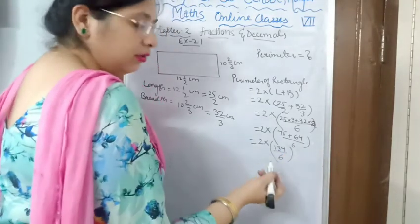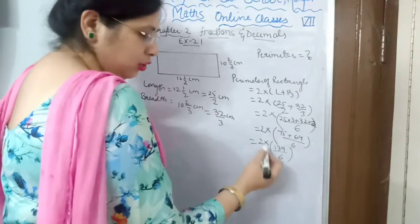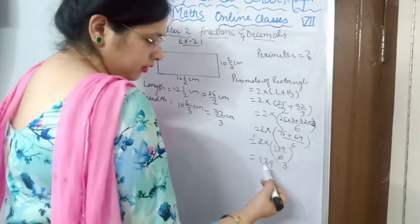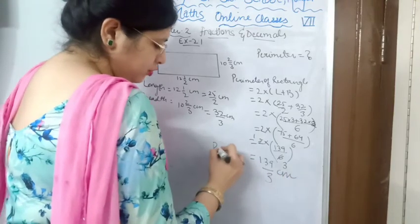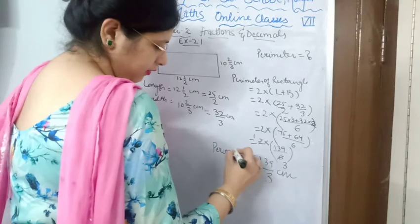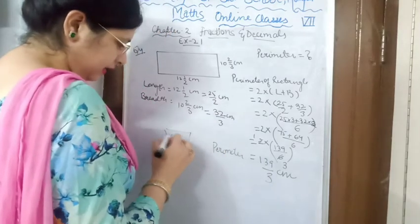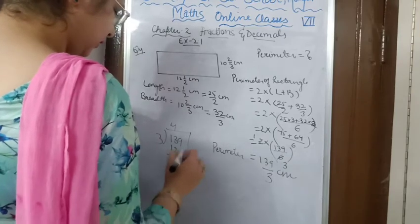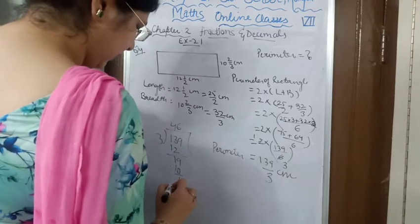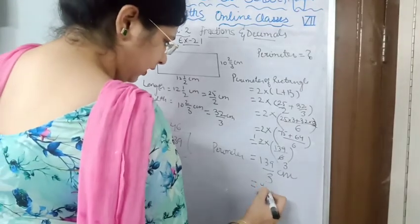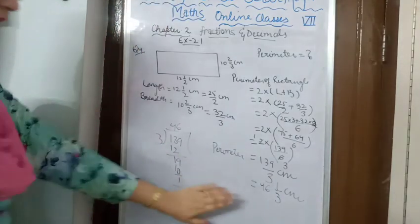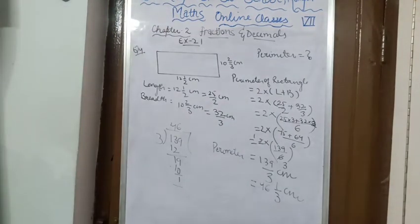We can cancel 2 and 6 — 2 ones are 2, 2 threes are 6 — giving 139 upon 3 as the perimeter. You cannot simplify further. So this is the perimeter. If you wish to convert this into a mixed fraction, divide 139 by 3: 3 times 46 is 138, remainder is 1. So the answer is 46 and 1 upon 3 cm. I hope it is clear — it was a very easy question.